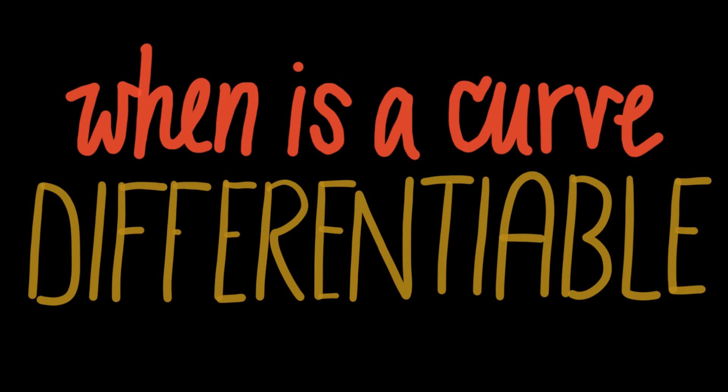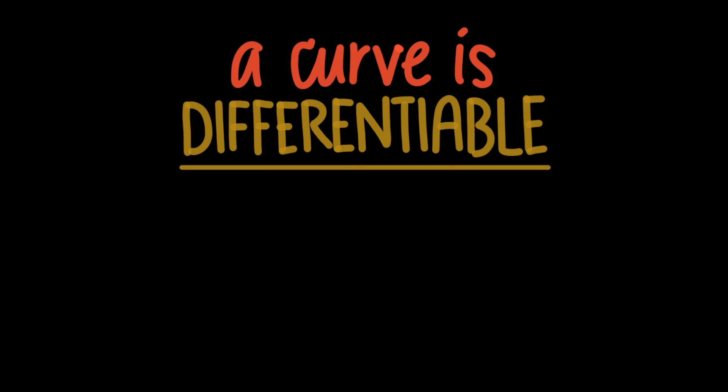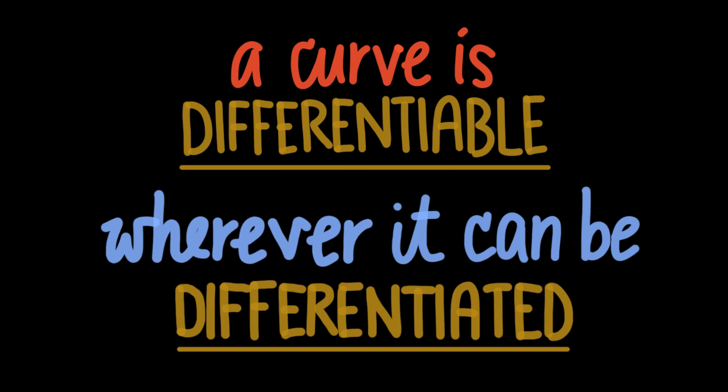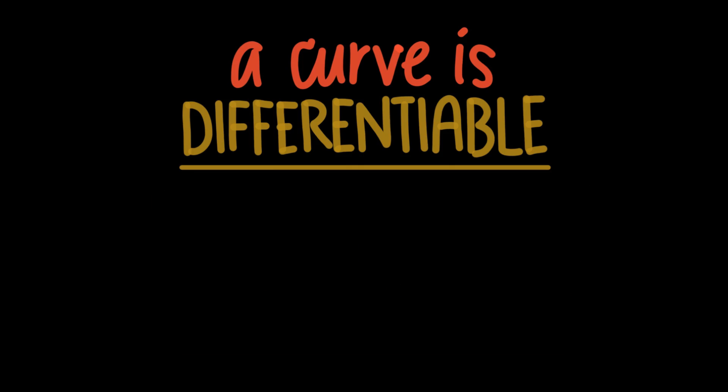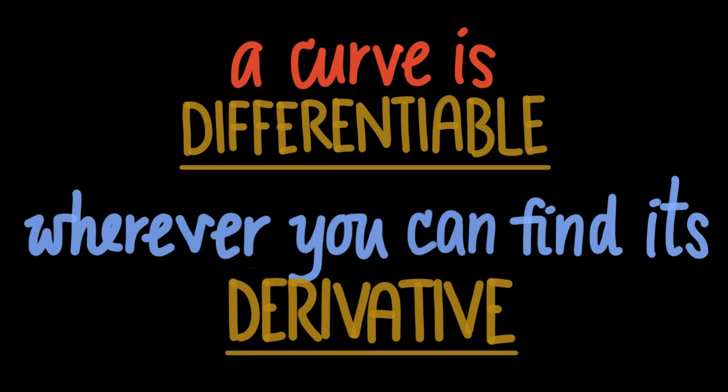In this video, we're talking about what it means for a curve to be differentiable. Any curve is differentiable wherever it's able to be differentiated. A more helpful definition would be that a curve is differentiable wherever you can find its derivative, meaning its slope at any given point.